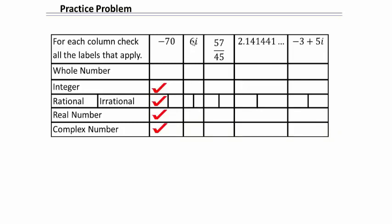6i: since it has an i in it, it's none of whole number, integer, rational, or real — but it is a complex number. The fraction 57 over 45: being a fraction automatically makes it rational, and therefore automatically real and complex. The number 1.41441444...1 — where each group adds an extra 4 — has a pattern but it is not a repeating pattern like 4,1,4,1, so that makes it an irrational number, and therefore real and complex. The last number, similar to 6i, has an i in it, so it's only a complex number.